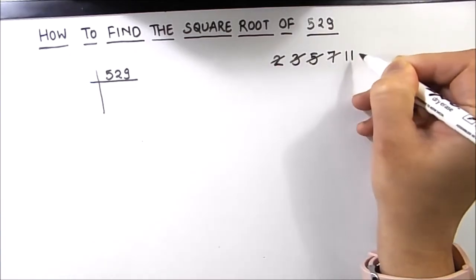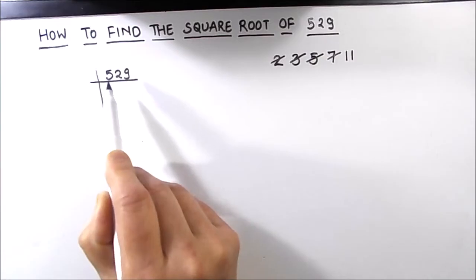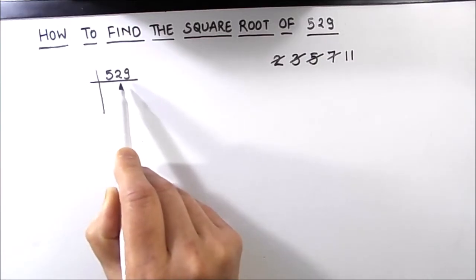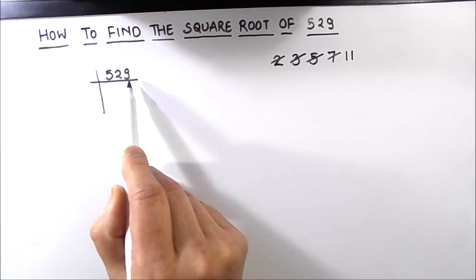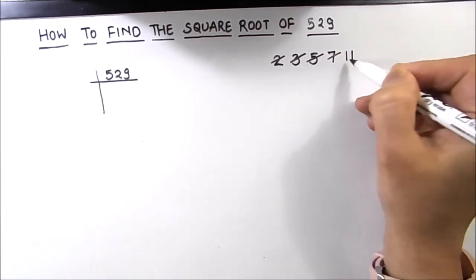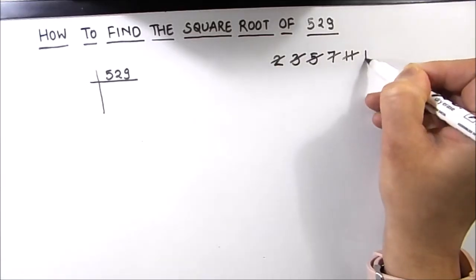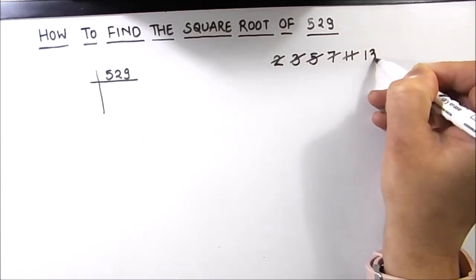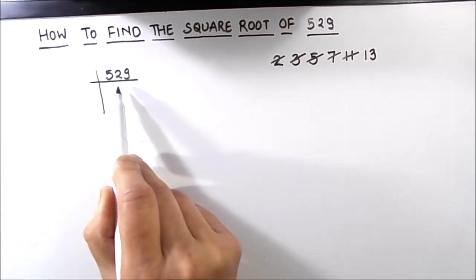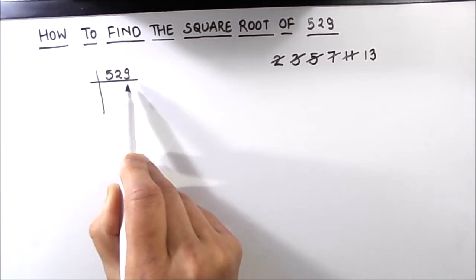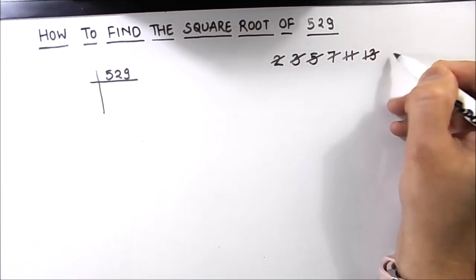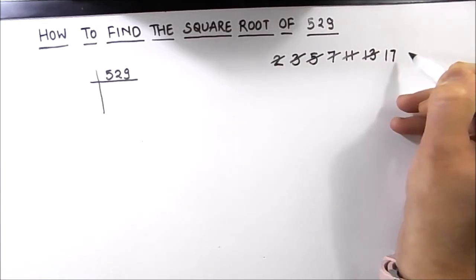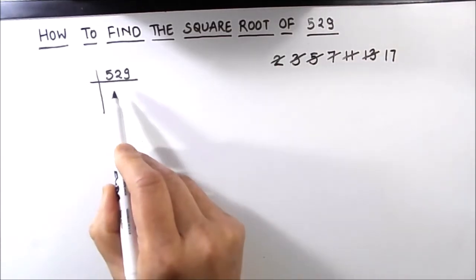The next prime number is 11. Checking: 11 times 4 is 44, remainder 8; this becomes 89, and 11 times 8 is 88, remainder 1. So 11 is also not a factor. The next prime number is 13. Checking: 13 times 4 is 52, remainder 9. So 13 is also not a factor.